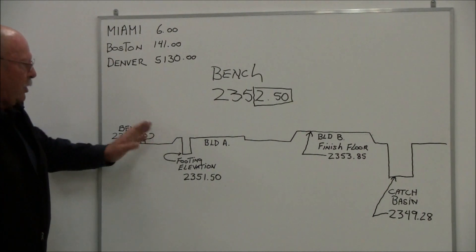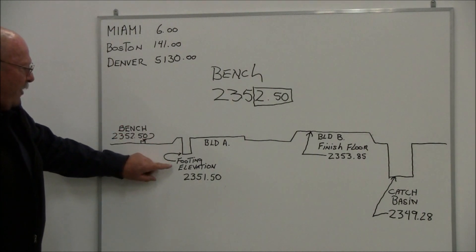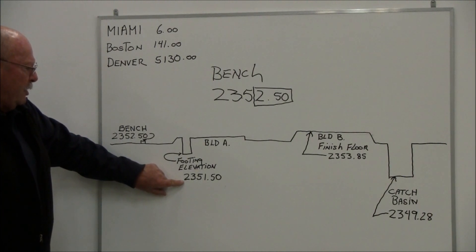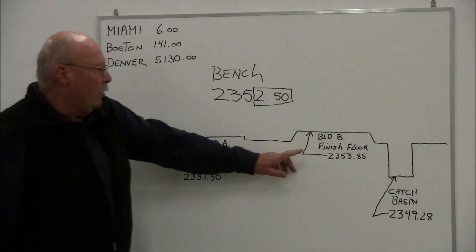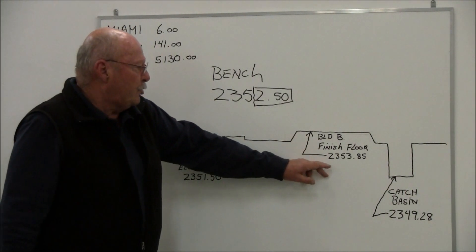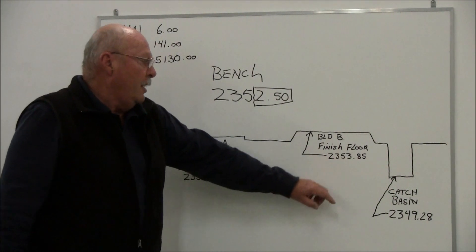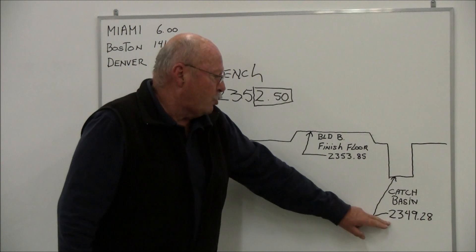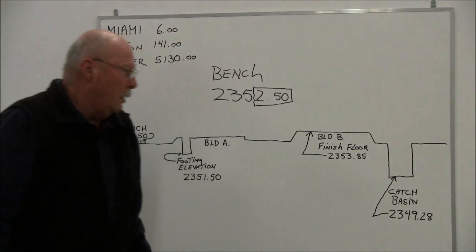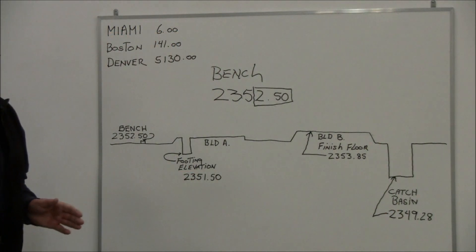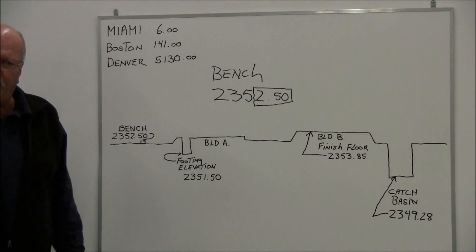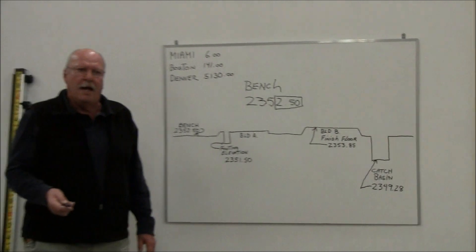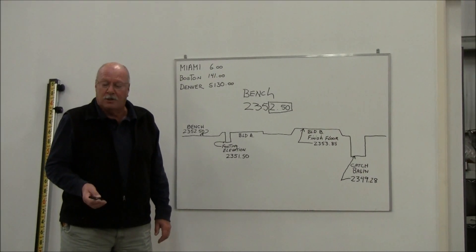On this particular illustration, if I have a footing elevation, it might be depicted as 2351.50. I might have a building finished floor at 2353.85. And in this case, I've got a catch basin of 2349.28. What's nice is we're going to show you how the direct reading rod works and how simple it is.